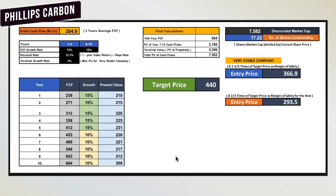Now we will derive the target price from the simple discounted cash flow model. We again use the average free cash flow for the previous three years, which is 204.90 crores. We assume 15% growth for years 1-5 and 10% for years 6-10. After 10 years, we assume 0% growth rate in perpetuity — the maximum benchmark we assume for a small-cap company. Discounting all free cash flows at 12.3%, the total present value of all free cash flows is 7,582 crores. Dividing by total shares outstanding gives the target price as per the DCF model.